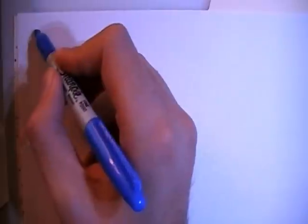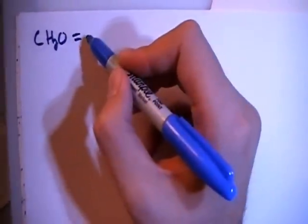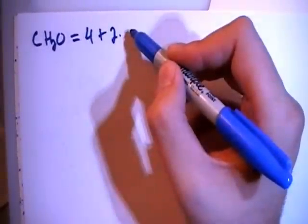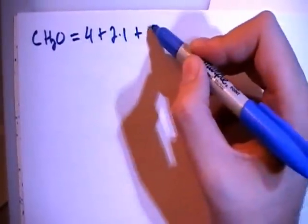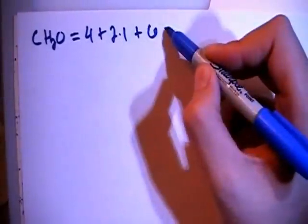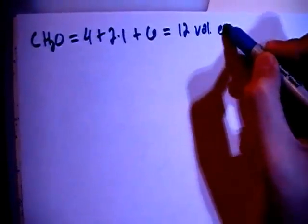Our chemical formula is going to be CH2O, which is going to give us 4 valence from the carbon plus 2 hydrogens, each with 1 valence electron, plus 6 electrons from the oxygen, for a total of 12 valence electrons.